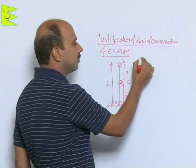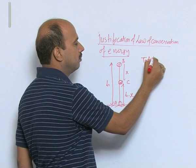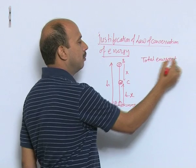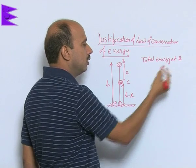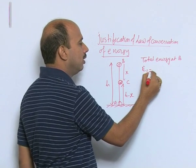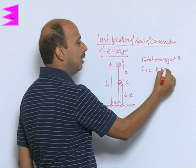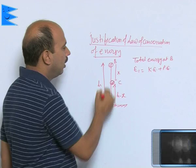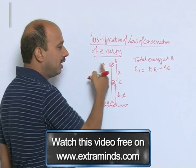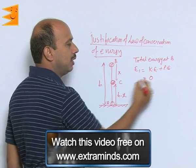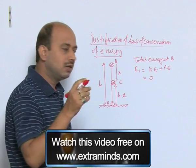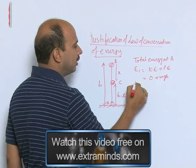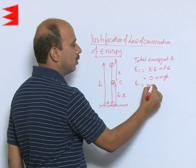First we will take total energy at B. That is E1, equal to kinetic plus potential energy. At B, height is h. Kinetic energy we can take as 0, because it is momentarily at rest, plus mgh. So the total energy E1 is equal to mgh.